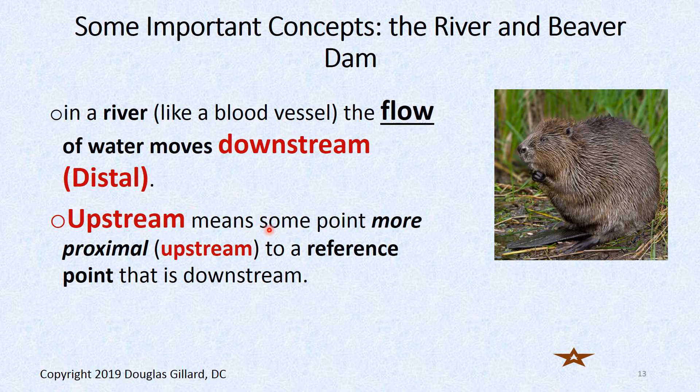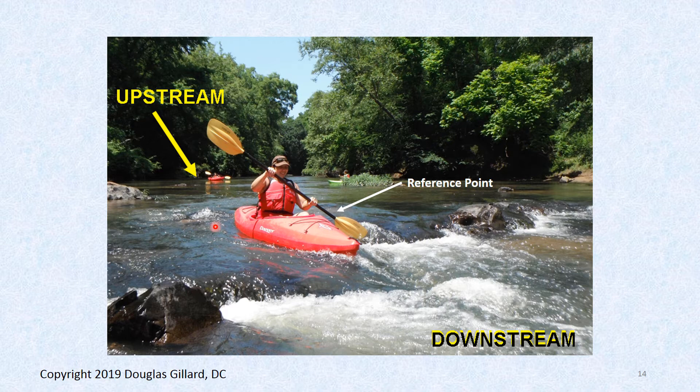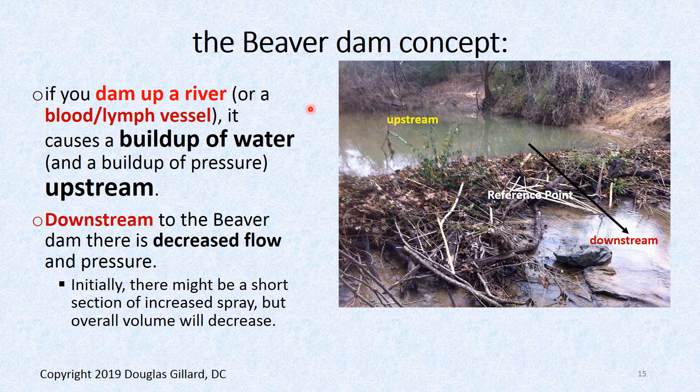Upstream to some reference point means proximal; downstream means distal. A perfect example is a kayak on the river — the person behind the kayak is upstream, and another boat ahead would be downstream. That's the upstream/downstream concept. Now: if you dam up a river or a blood vessel, it causes a buildup of water upstream.